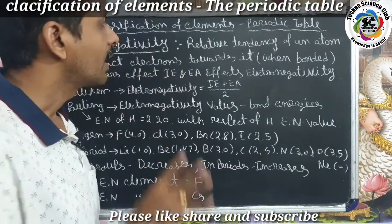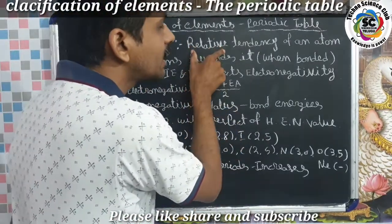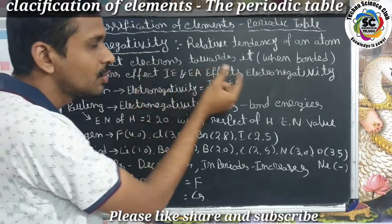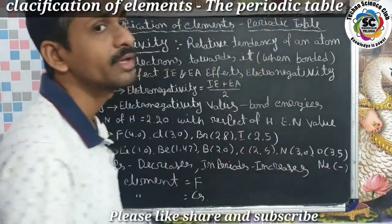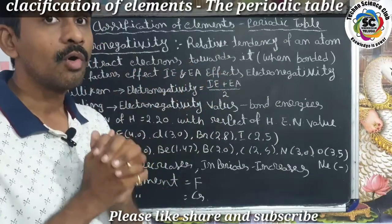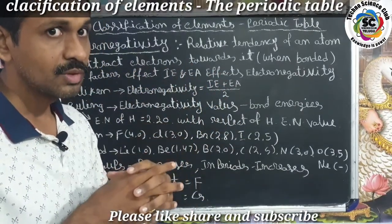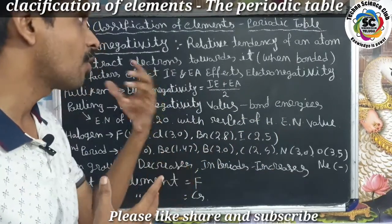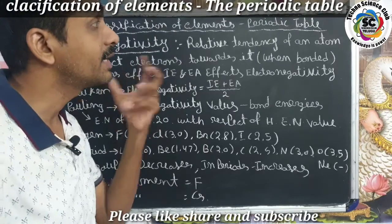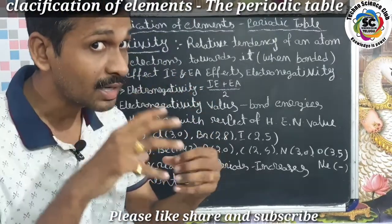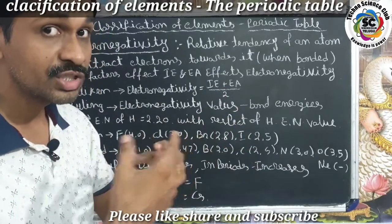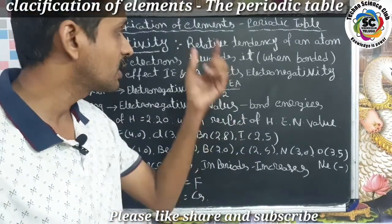First of all, what is electronegativity? Electronegativity is the relative tendency of an atom to attract an electron towards it when it is in bonding with another atom of another element — when a covalent bond is formed.